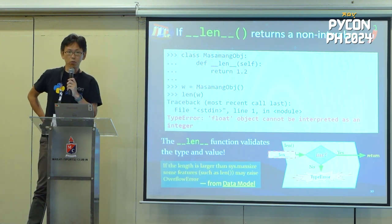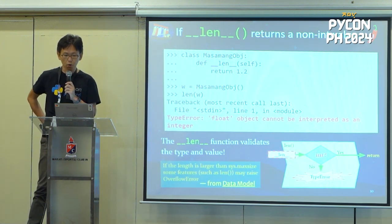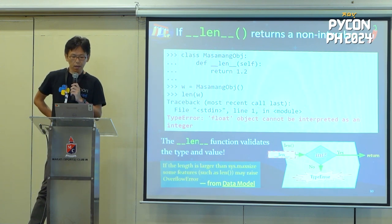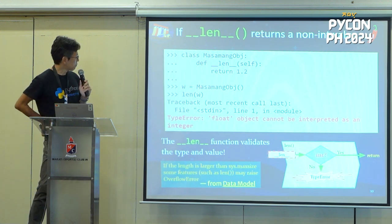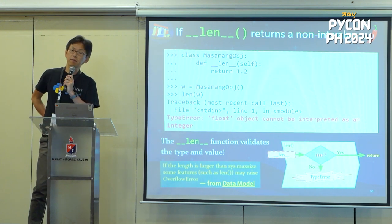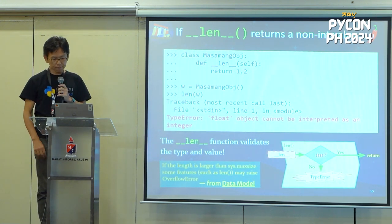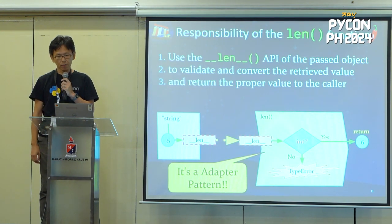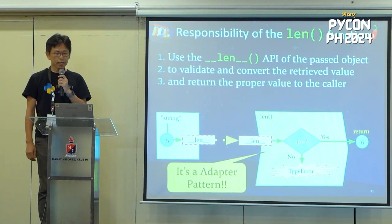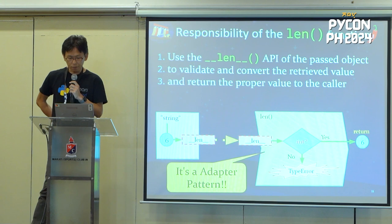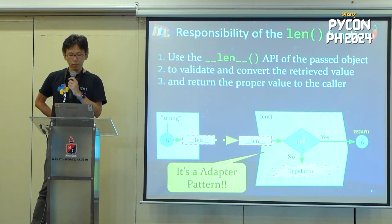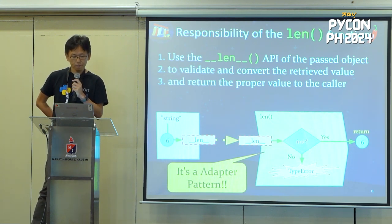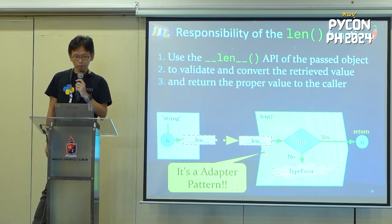There is another exception if a big numerical value is returned from the `__len__` method — you get a max size exceeded exception. The responsibility of the len function is to call `object.__len__()`, check the obtained value, and return the appropriate value to the caller. This is called the adapter pattern, which performs interface conversion.